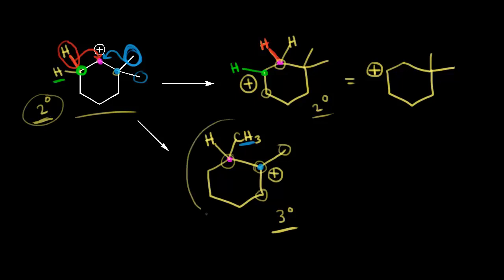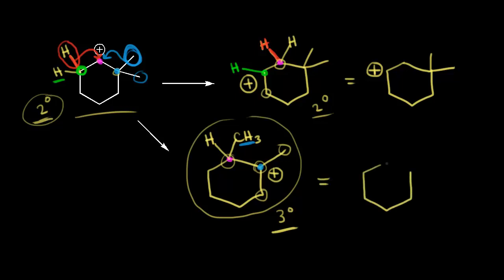So this is the rearrangement that's going to occur — we get a methyl shift to form a tertiary carbocation. Drawing it without the hydrogen, we can see what it looks like a little better: we have those methyl groups with a plus one formal charge on this carbon.